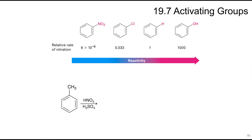In this section, we're going to be looking at different activating and deactivating groups. When we add a substituent onto a benzene ring, that is going to affect the rate of the reactions. Some substituted benzenes may undergo electrophilic aromatic substitution reactions more quickly than unsubstituted benzene. Benzene reacts at a rate of 1, toluene is 25 times faster, adding an electron-donating OH group makes the reaction 1,000 times faster, and adding a nitro group, which is electron withdrawing, slows the reaction down by 6×10⁻⁸.